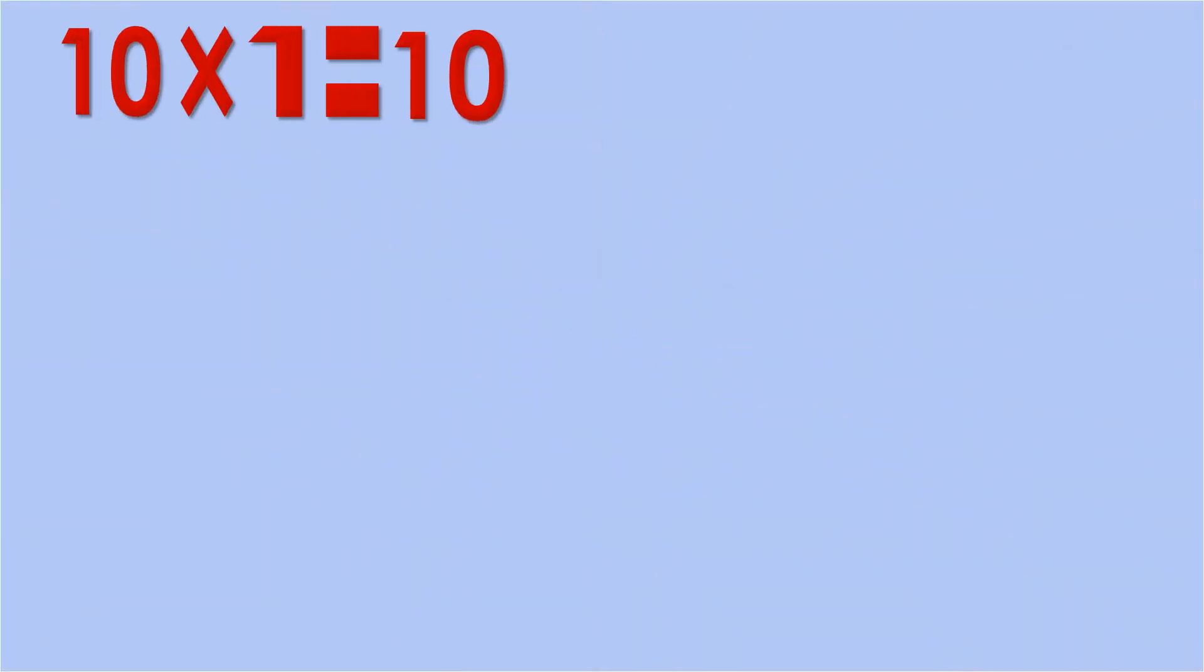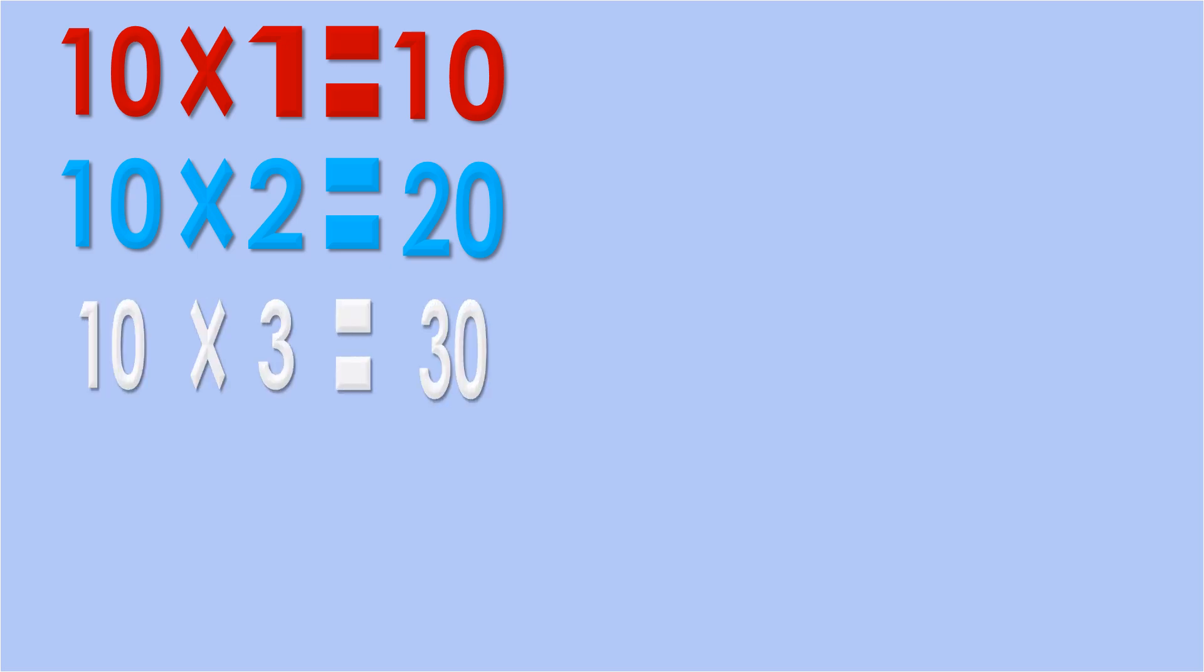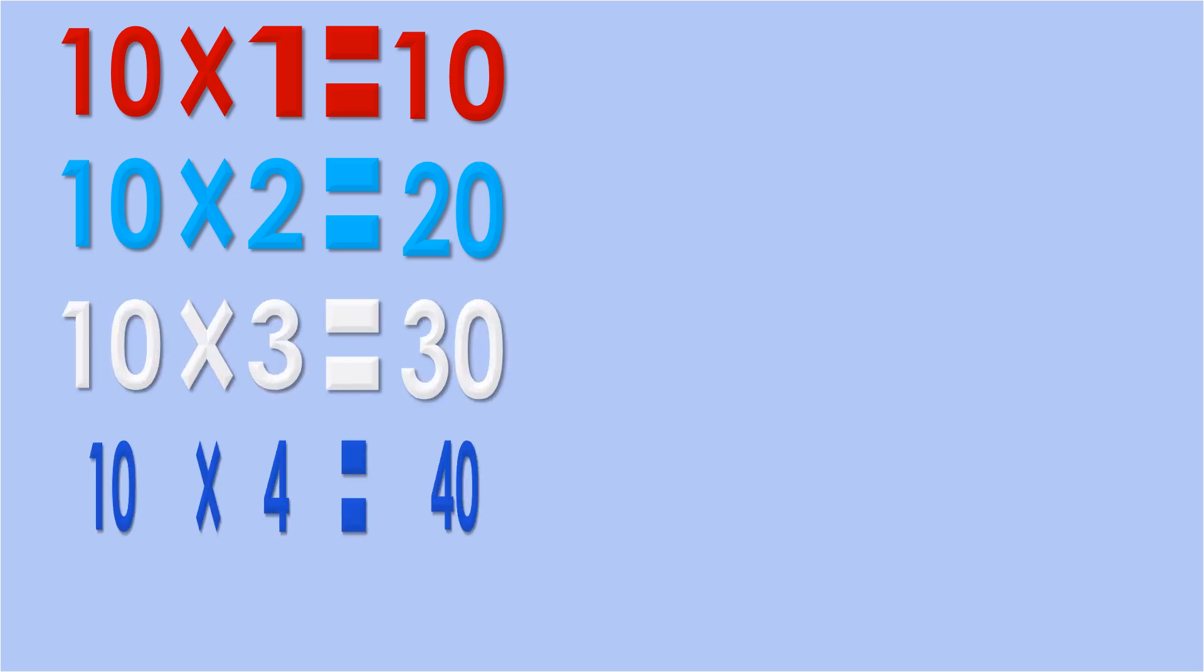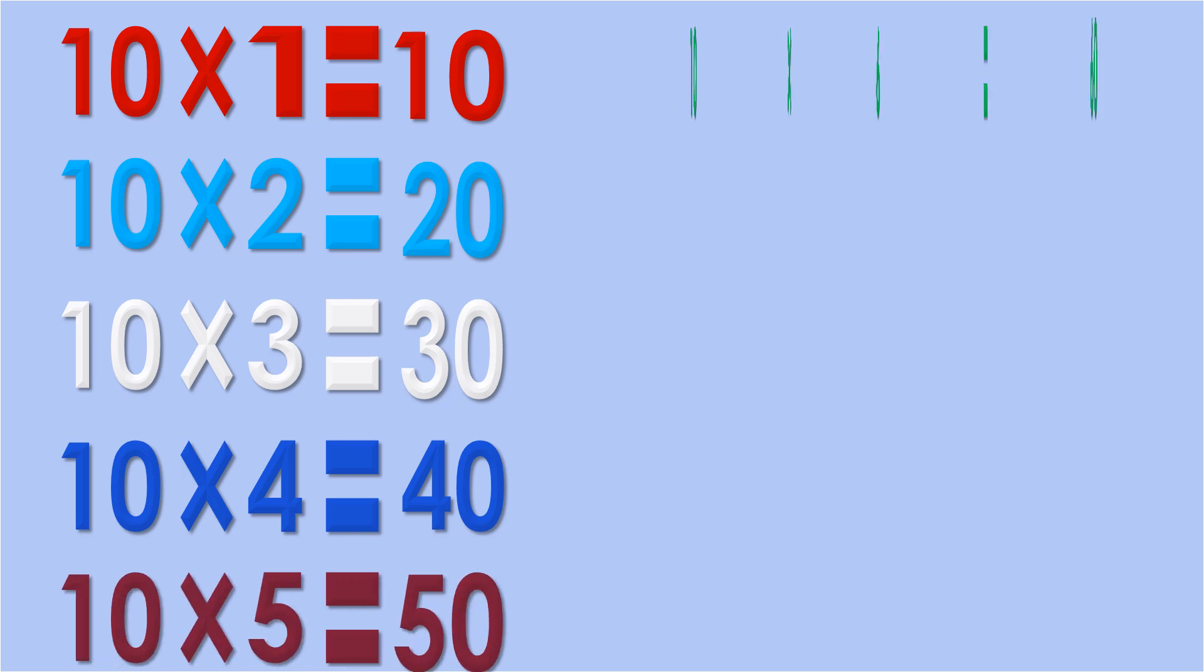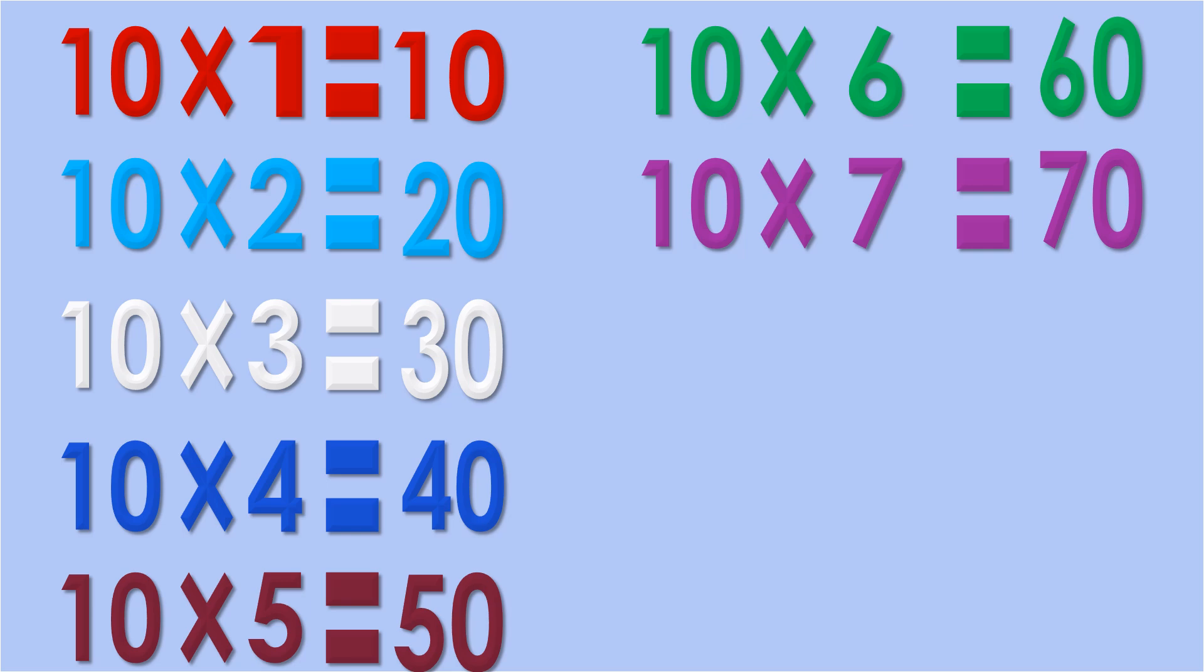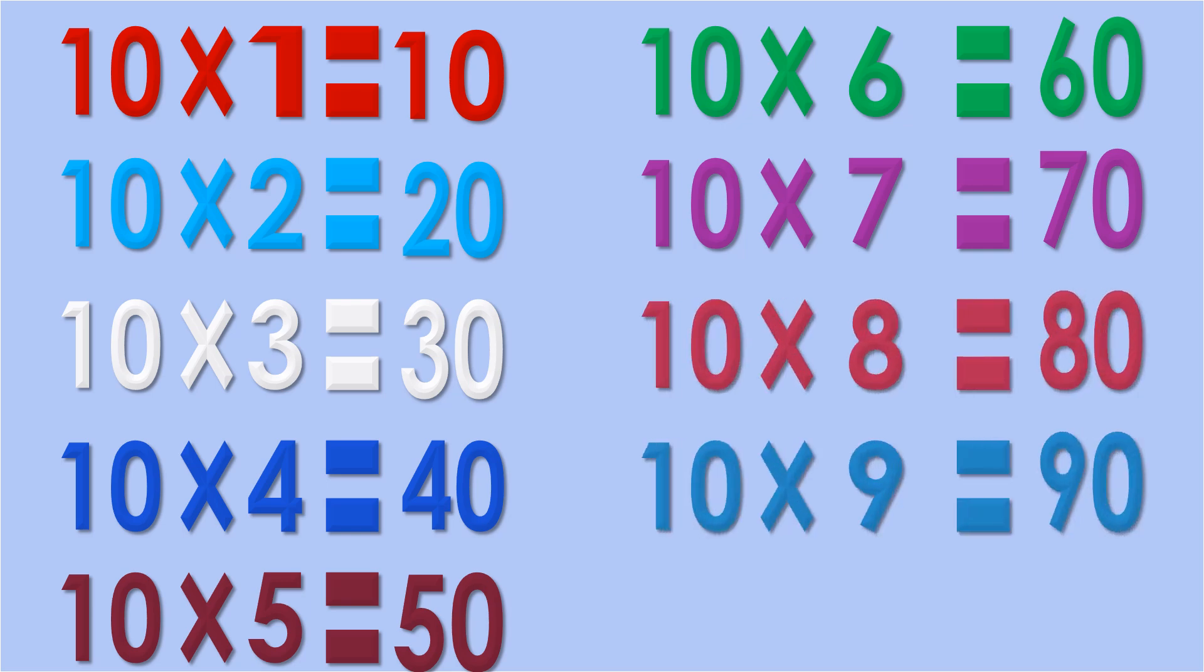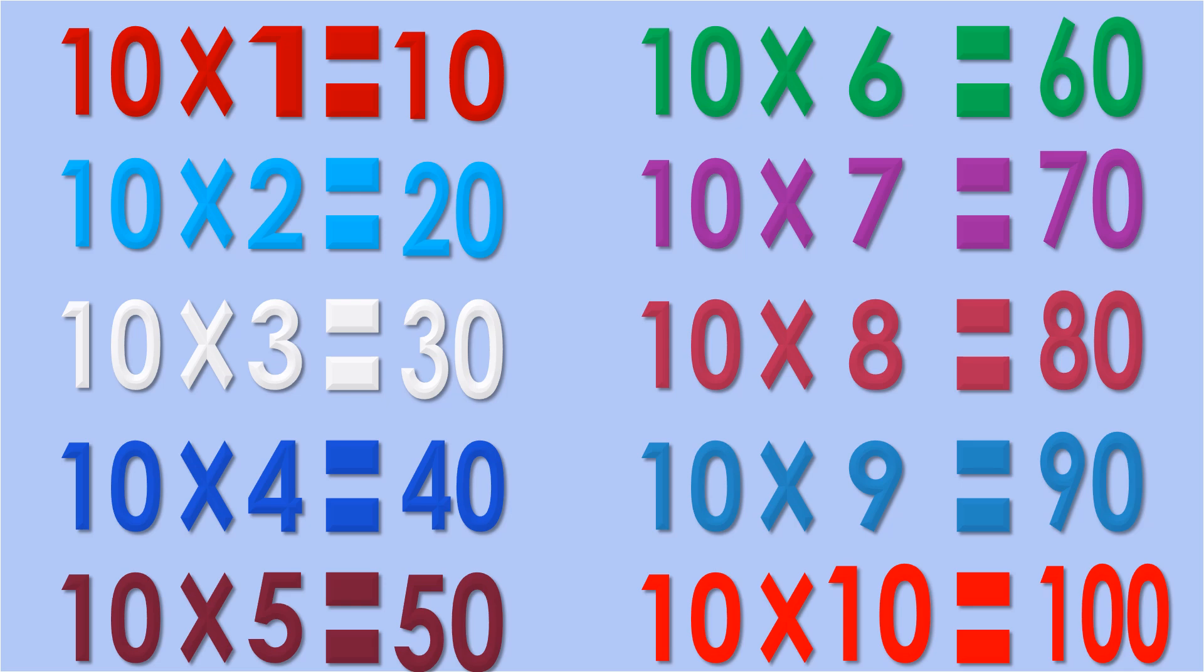10 ones are 10, 10 twos are 20, 10 threes are 30, 10 fours are 40, 10 fives are 50, 10 sixes are 60, 10 sevens are 70, 10 eights are 80, 10 nines are 90, 10 tens are 100.